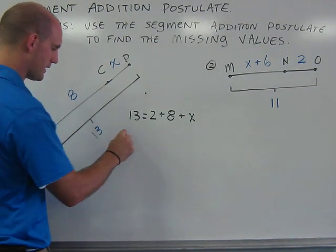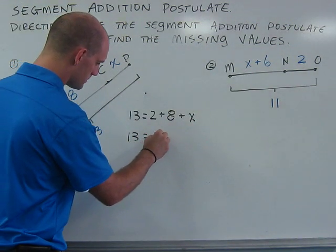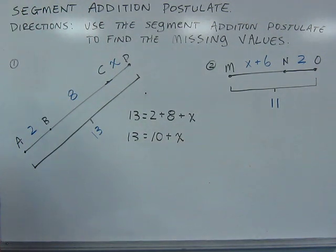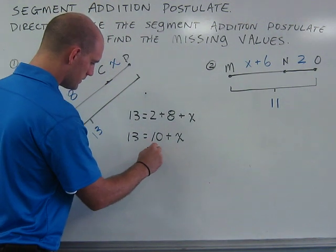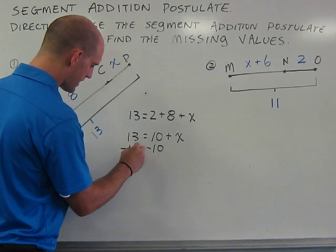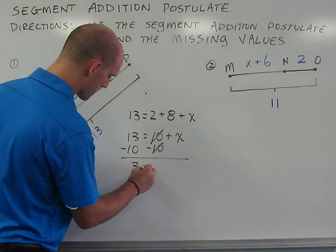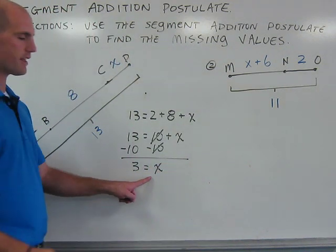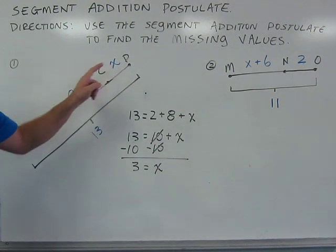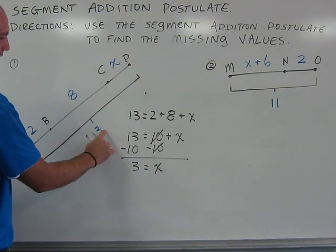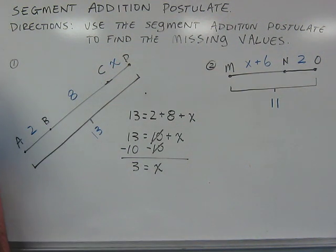I combine like terms and I use opposite operations, and subtract 10 from each side. I find that 3 is equal to X. So, when I add up 2 and 8 and 3, I get 13, using the segment addition postulate.